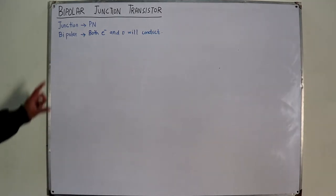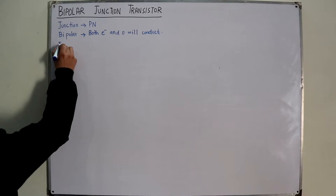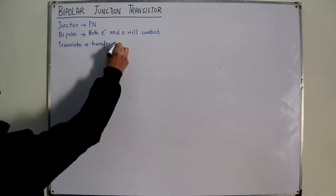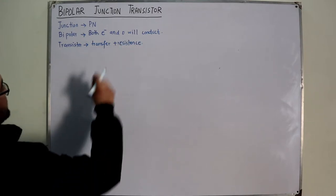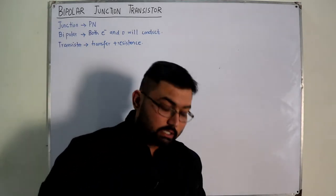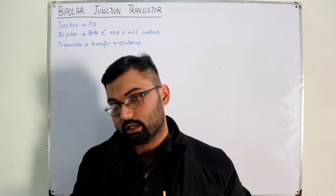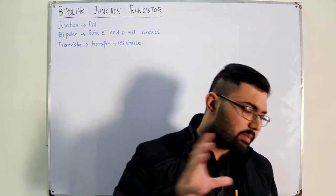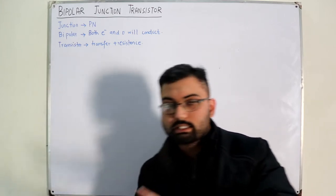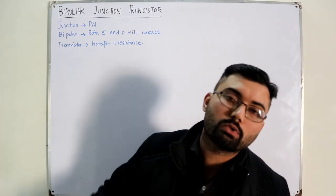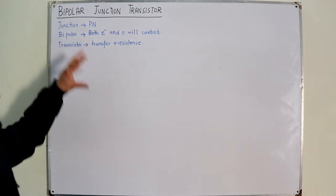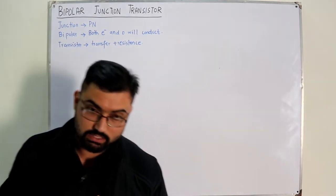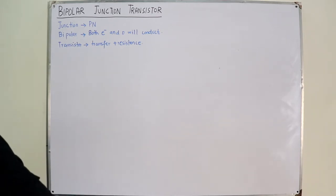The word 'transistor' comes from 'transfer' plus 'resistance.' This means you transfer from a lower resistance at the input side to a higher resistance at the output side. Since the current remains the same in the network, the output voltage becomes greater than the input voltage - that's the amplification. A weak signal at the input gives an amplified version at the output.